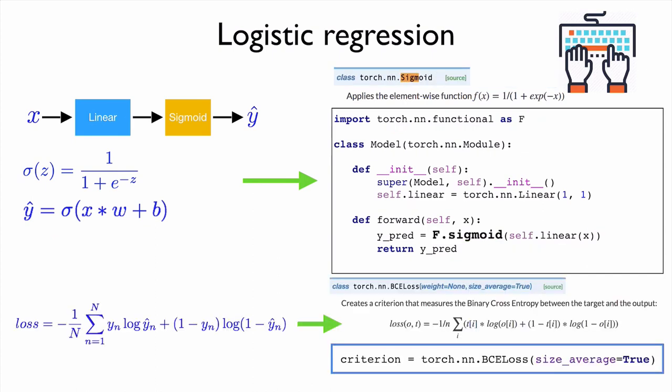And for the loss, previously, we just used MSE loss. But here, we just change this loss with a BCE, which is binary cross entropy loss. And we can just define our criterion using this API called BCE loss. And that's it.